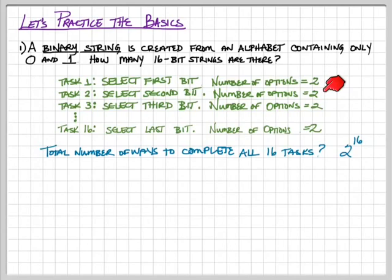Task 2 is going to be to select the second bit. Again, there will be two options. Task 3, select the third. And task 16 is going to be to select the 16th bit. In each case, we have two options. And so the total number of ways, the total number of 16-bit strings is going to be the product of all these twos. There are 16 of them, so it ends up being 2 to the 16th. So that is a very straightforward application of the product rule.